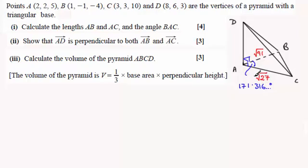The perpendicular height is going to be the length AD. We need to get that, and we know that from part two we got the vector AD but didn't get its length.